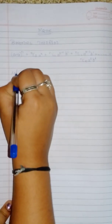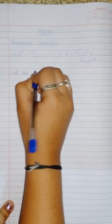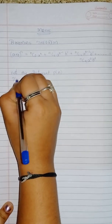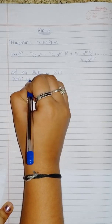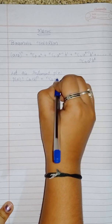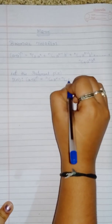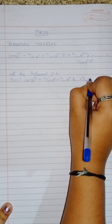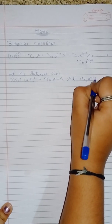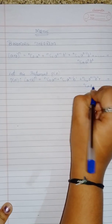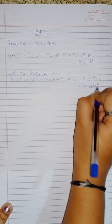The first step is to let this statement be P(n) — that is, we should consider the statement as a single statement P(n). It will be easy to prove if we consider it as a single statement: nC2·a^(n-2)·b^2 + ... + nCn·b^n.